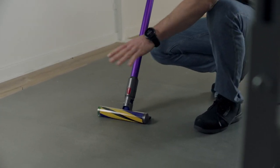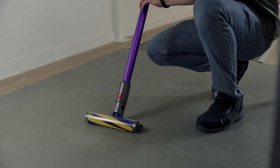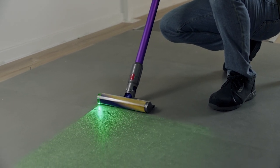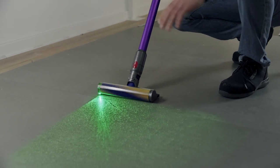So we've got dust that we can't see on the ground, but when we turn the light blade on, you can now see that dust illuminated across the floor.